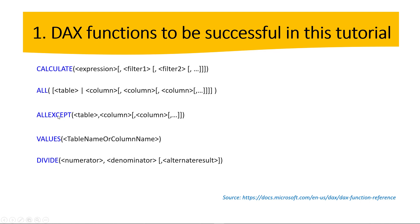Next, the ALL function — this is basically a CALCULATE modifier, so we can remove filters from any table or any column. Then we have the ALLEXCEPT function, which references a table and removes all the filters except for some specific columns. We also have the VALUES function, which restores any filter from a table or column. Finally, we have the DIVIDE function, which is very helpful to find percentages because we divide the numerator by the denominator to find a specific percentage.